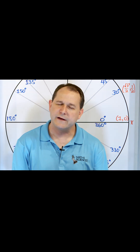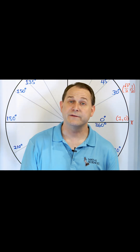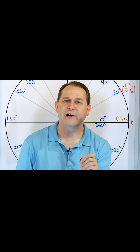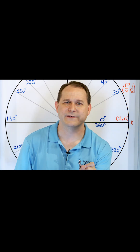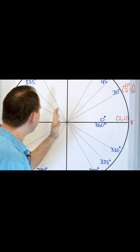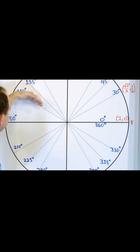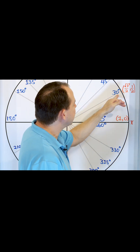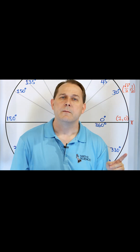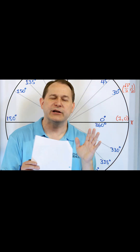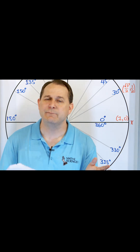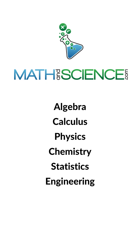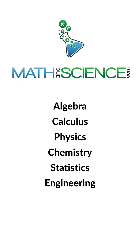So the secret sauce of figuring out what the sine or the cosine is of any of these angles around the unit circle is to figure out the reference angle first. Because if I know the reference angle here is 30 degrees, and I already know what the sine and cosine of 30 degrees is from quadrant one, then in the other quadrants the sine and cosine will have the same numbers, but different signs. Learn anything at mathandscience.com.